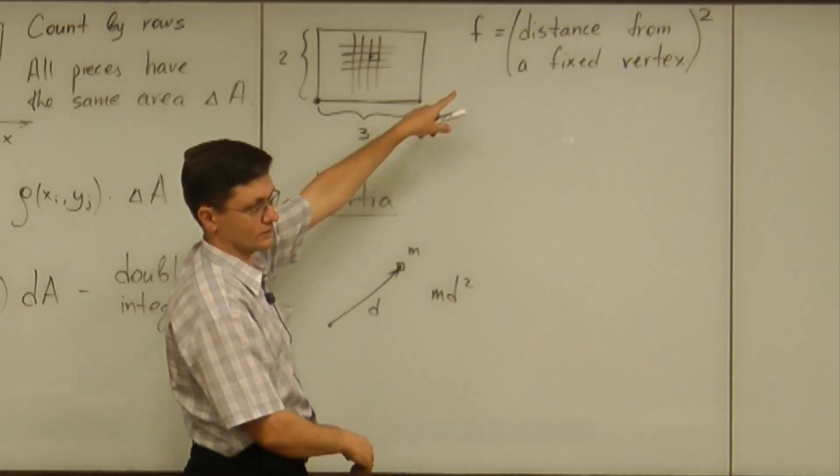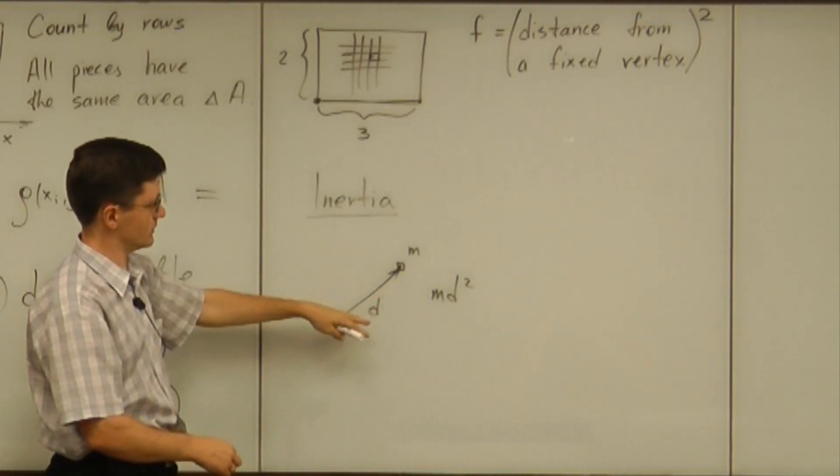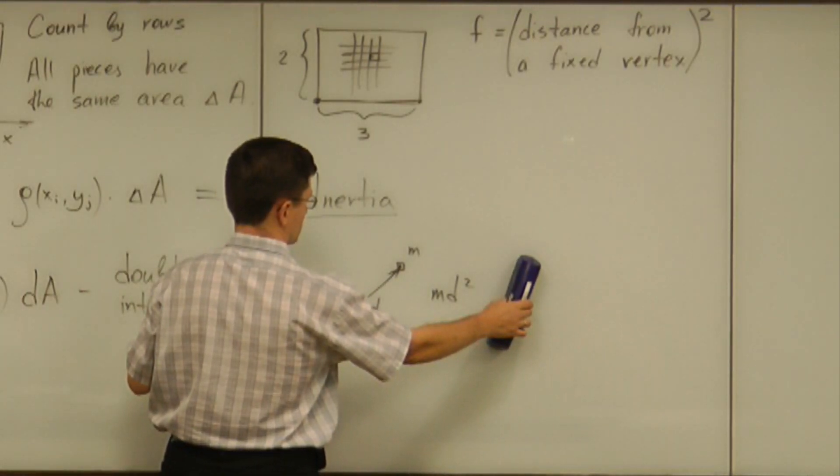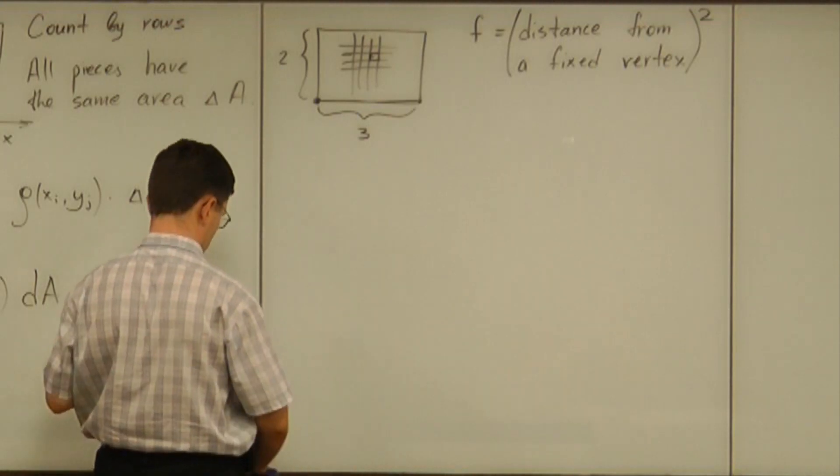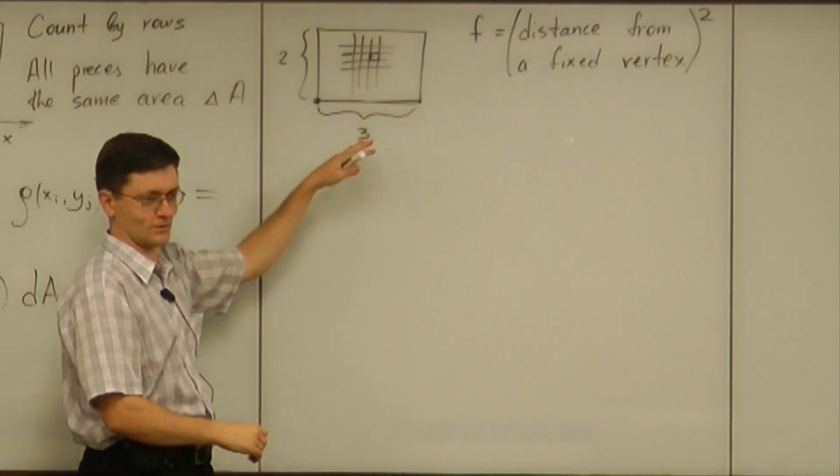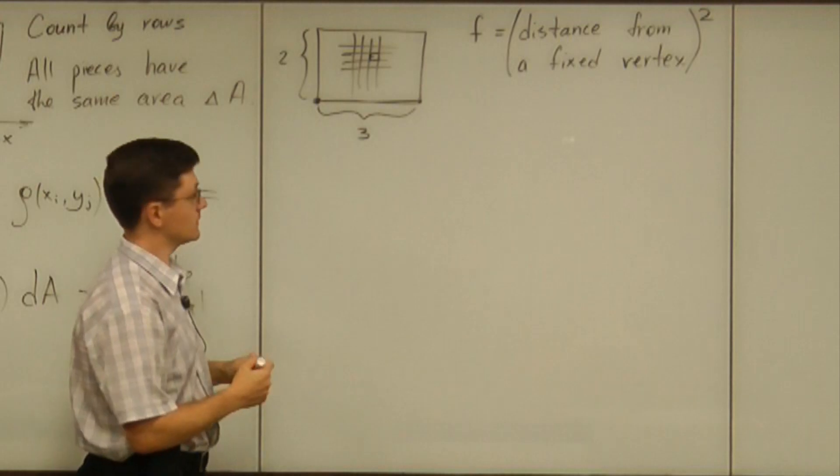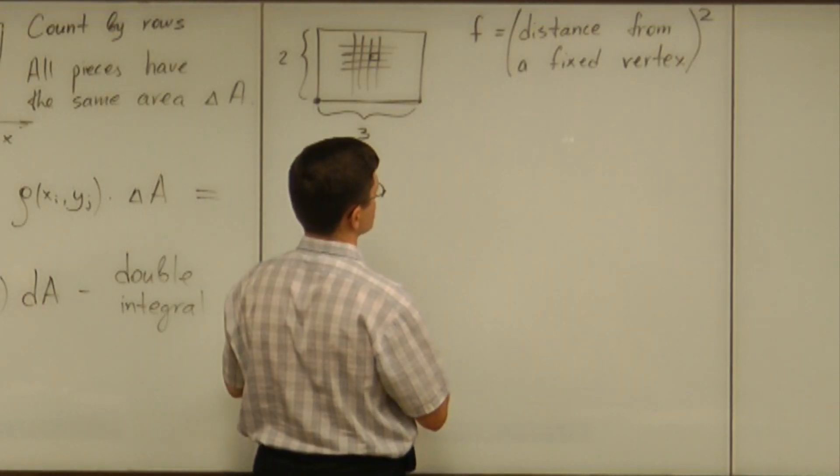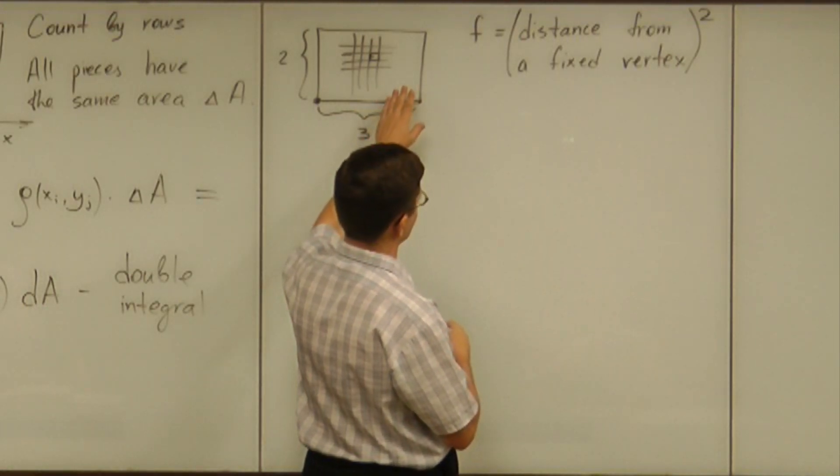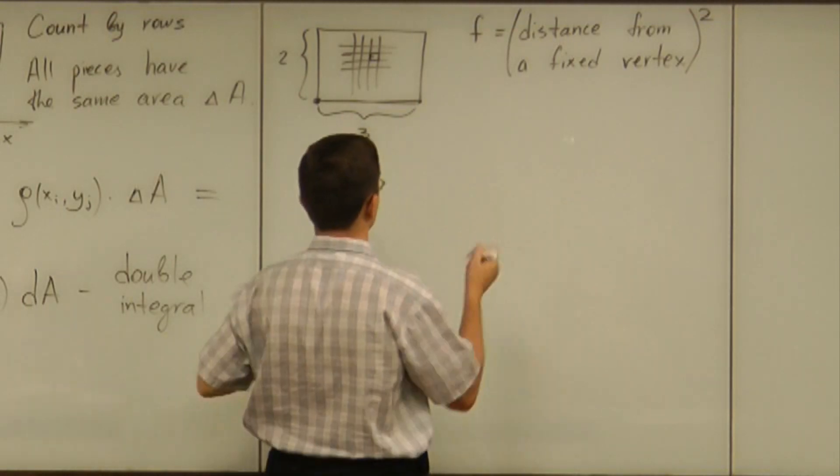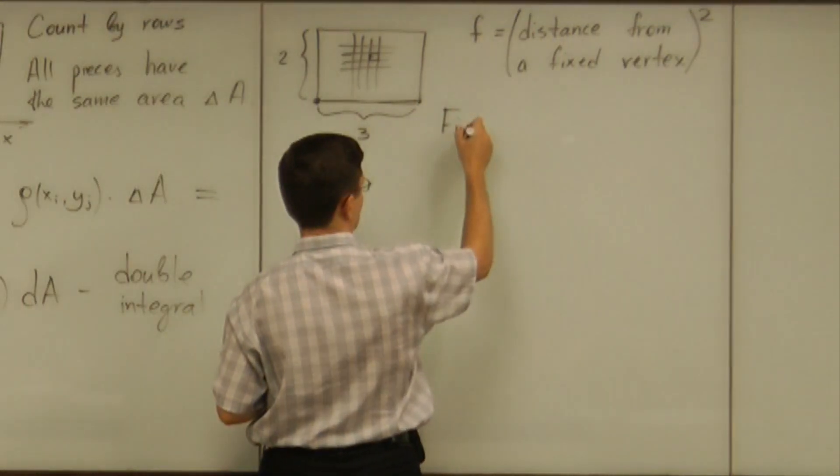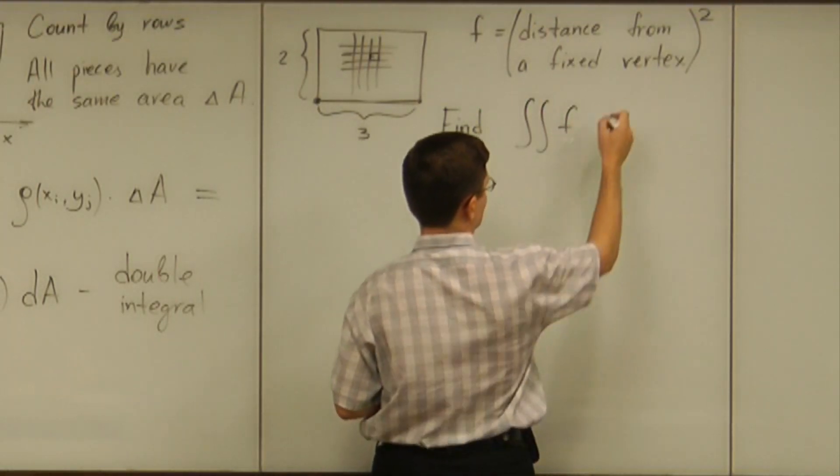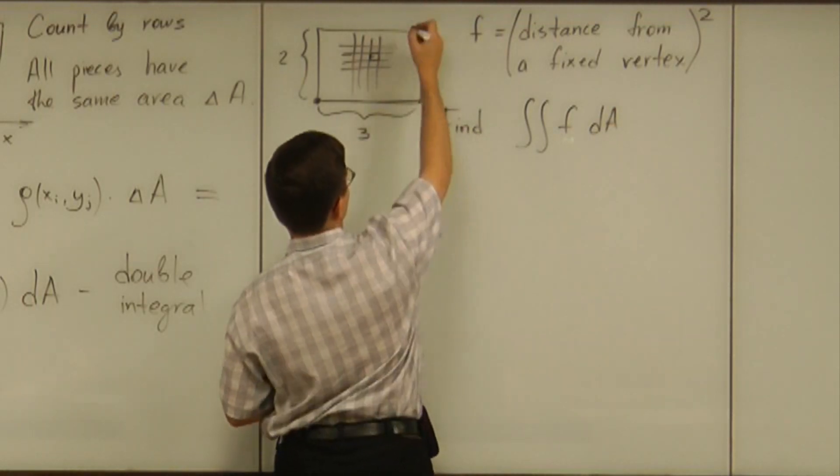You relate that abstract double integral problem to the inertia of the plate eventually. But, let me stay abstracted without any physics involved. Because my focus now is going to be on computation of double integral. So, the setup now is that you have to find double integral of that function F over this region R.